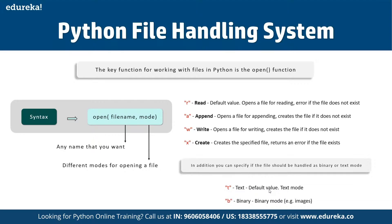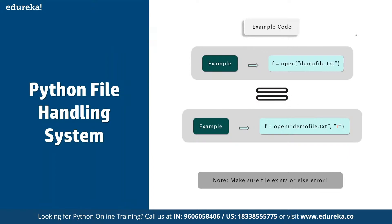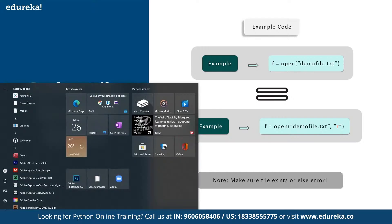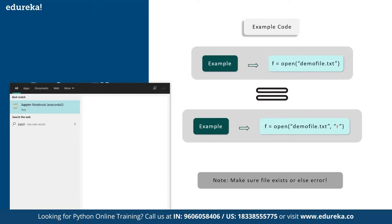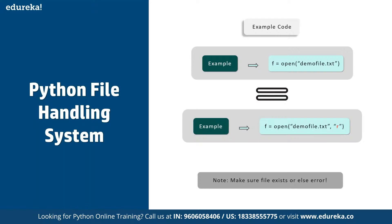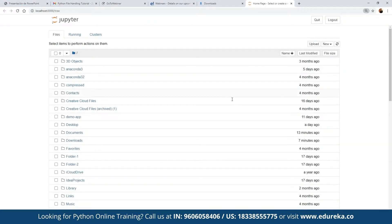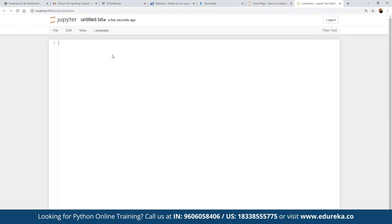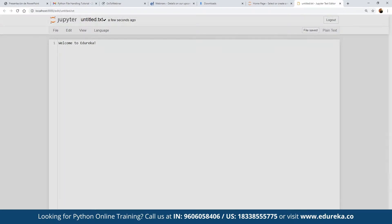Let's look at a hands-on example in Jupyter Notebook. We define a variable F, use open() with the file name and mode. First, we create a simple text file — let's call it sample.txt — with the content 'Welcome to Eureka'. We save it and then open a new notebook to demonstrate reading that file.